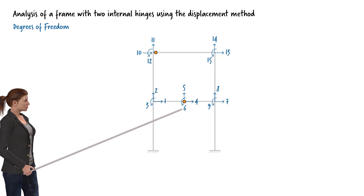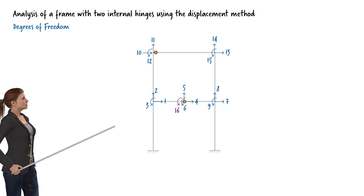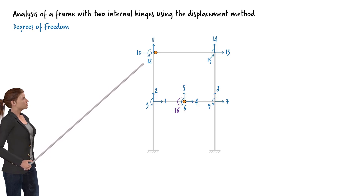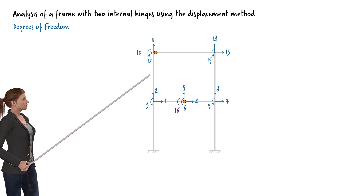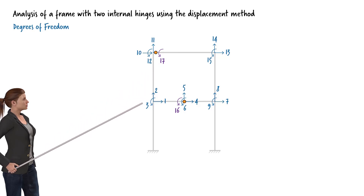We need one degree of freedom to represent the rotation of the right beam and another to represent the rotation of the left beam. Let's use degree of freedom 6 for the right beam and define a new degree of freedom for the rotation of the left beam at node 4. At node 6, we use degree of freedom 12 to represent the rotation at the upper end of the column, and a new degree of freedom numbered 17 to represent the rotation at the left end of the beam.